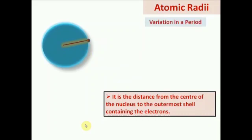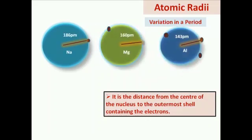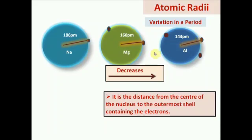Let us see the trends in a periodic table. If we move from left to right in a period, the atomic radius decreases. This is because moving left to right, the effective nuclear charge — that is, the number of protons in the nucleus — goes on increasing, so the attraction between the nucleus and the outermost electron increases, and atomic radius decreases.